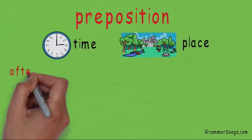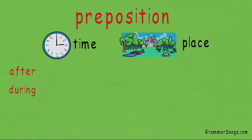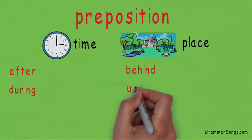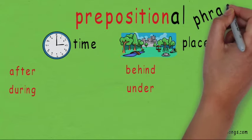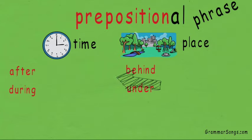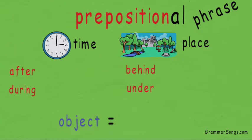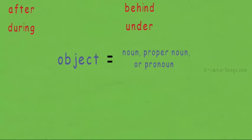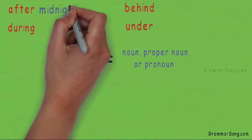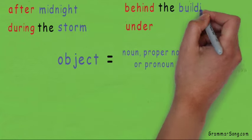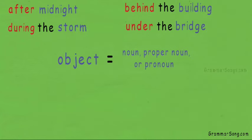Examples of prepositions of time are 'after' or 'during.' Examples of prepositions of place are 'behind' and 'under.' A prepositional phrase begins with a preposition, but it contains an object of a preposition — a noun, proper noun, or pronoun — to tell when something happens or where it occurs. Using those prepositions, we could easily turn them into prepositional phrases: after midnight, during the storm, behind the building, under the bridge. Each prepositional phrase provides information that makes writing and speaking more specific.